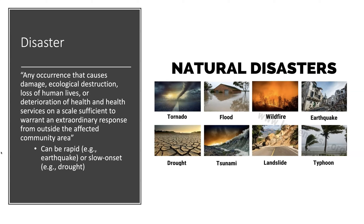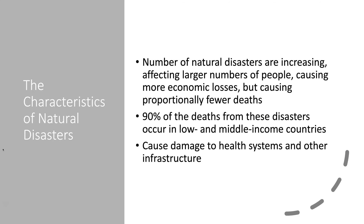Typical causes of natural disasters include rapid-onset events such as tornadoes, floods, wildfires, earthquakes, typhoons, landslides, and tsunamis. Slow-onset disasters include drought, which we see in sub-Saharan Africa, especially due to climate change. The number of natural disasters is increasing, affecting larger and larger numbers of people, again from the impact of climate change.